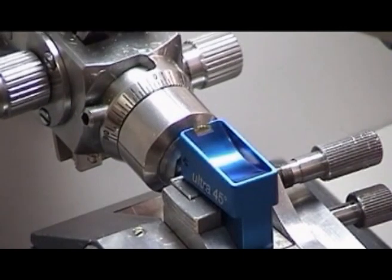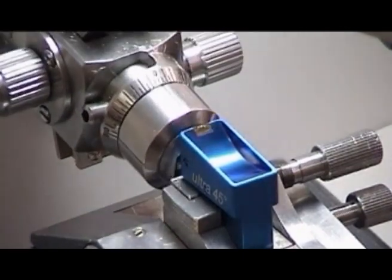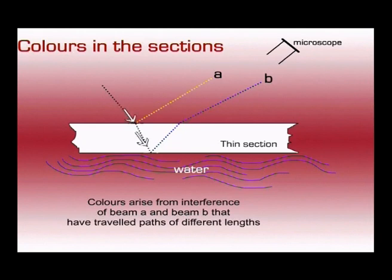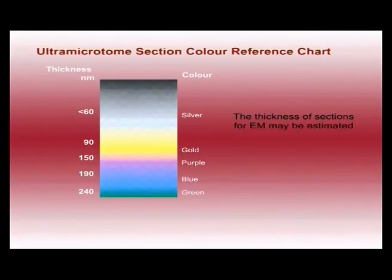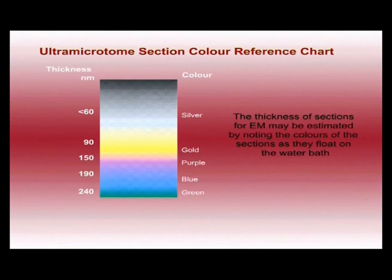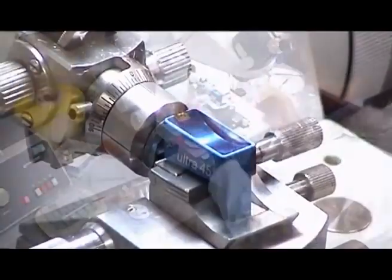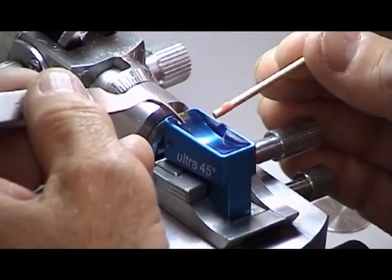The different colors result from interference between the rays of light reflected off the upper and lower surfaces of the sections. Colors vary according to thickness. Here you can see sections of different colors and hence different thicknesses. Only the silver sections are suitable for electron microscopy. They are 80 nanometers thick. Compression in the sections is removed by using chloroform vapor. Note the color changes as the sections stretch. Sections are now ready to be collected onto a copper support grid. Grids are used instead of glass slides because electrons cannot penetrate glass. The grid is lowered into the water bath and the sections maneuvered onto it. The grid with the sections on it is then dried on filter paper.